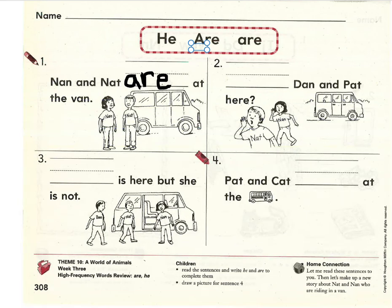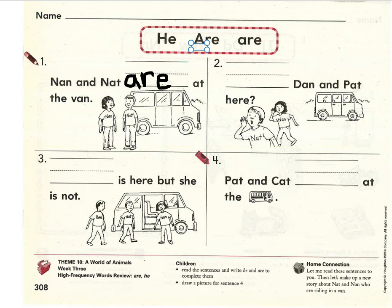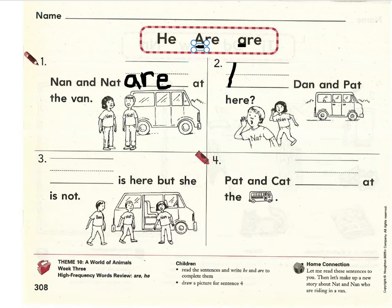Number two, read with me please. Blank, Dan, and Pat, here. Let's read it again with the sight word he: He, Dan, and Pat, here. That didn't really make sense. Let's try the sight word are: Are Dan and Pat here? Yes, that makes sense — they're asking a question. Now, which are should I use — the one with the capital letter or the one with the lowercase letter? I should use the one with the capital letter because it's the start of the sentence. A-R-E, please make sure you write a capital A and everything else lowercase. Are Dan and Pat here?